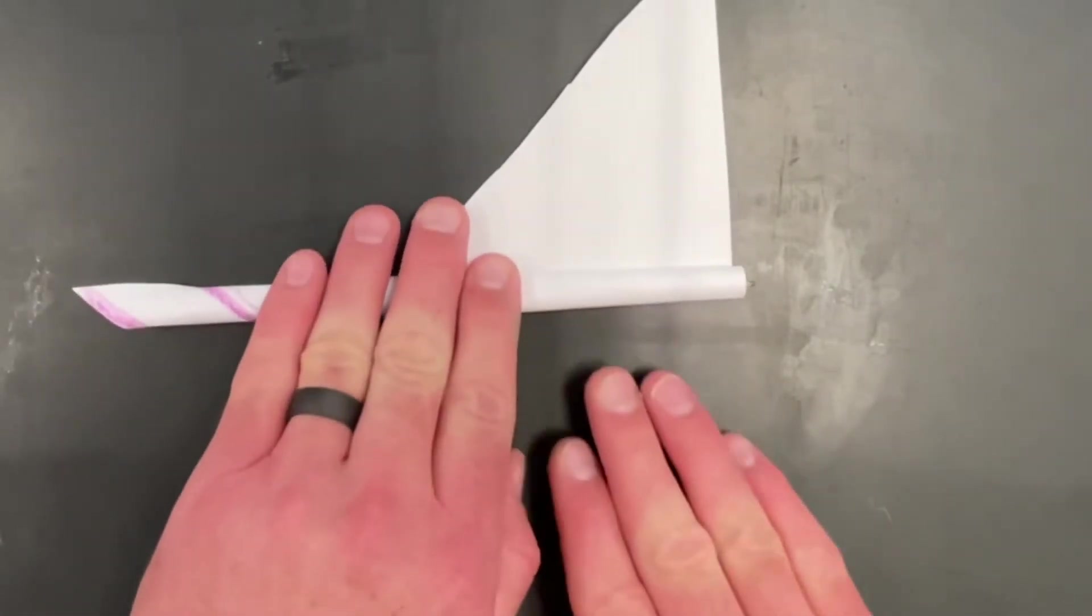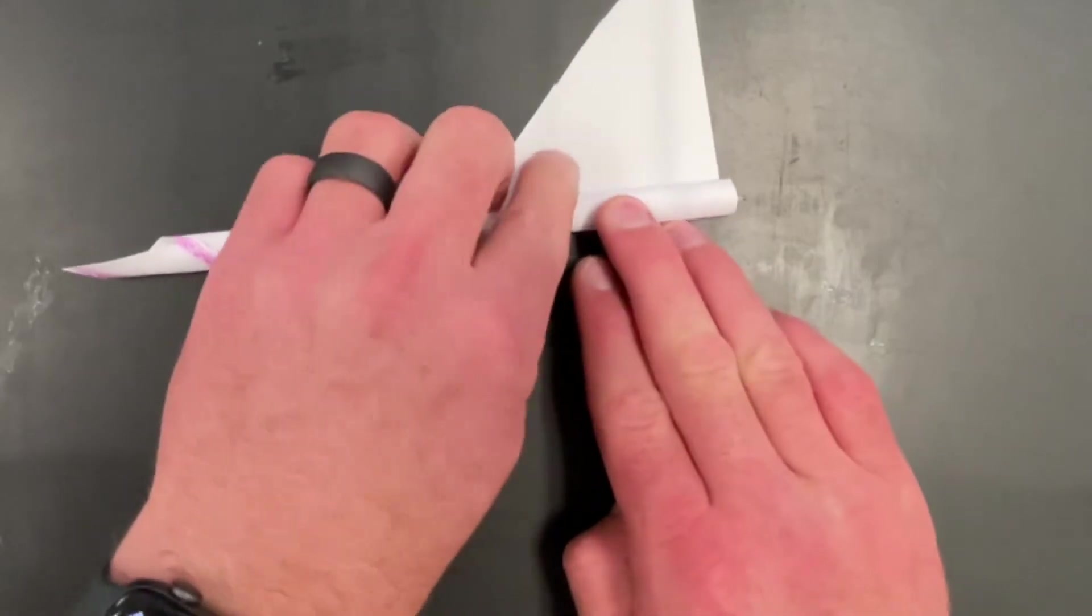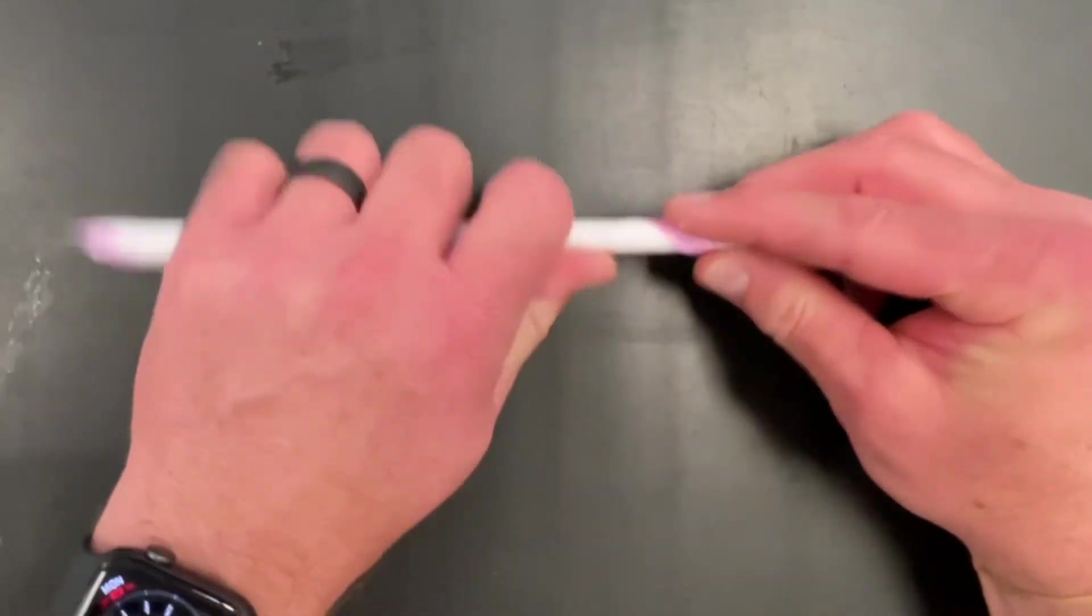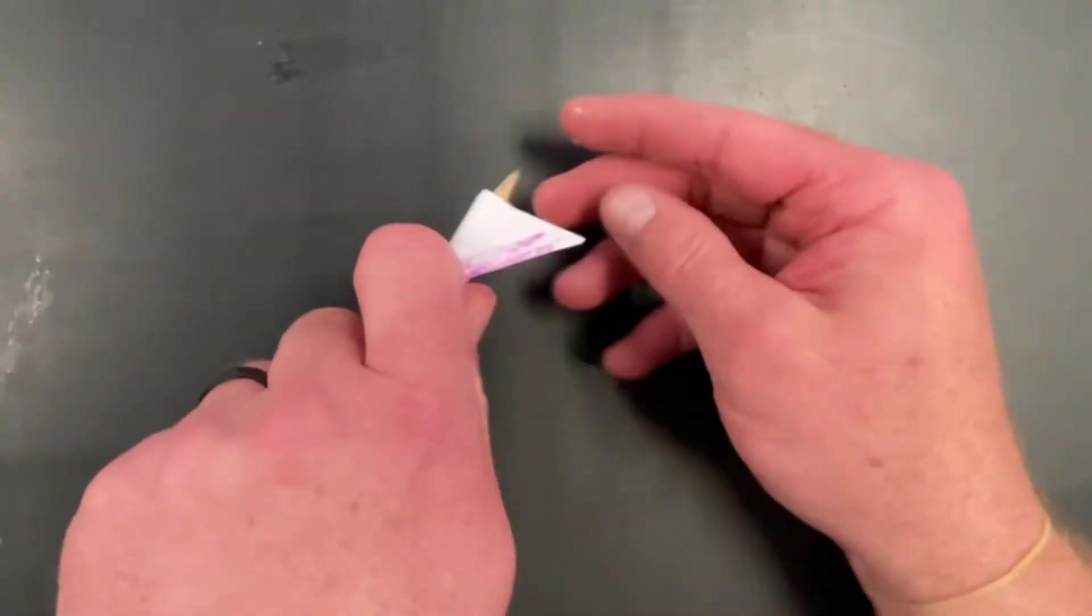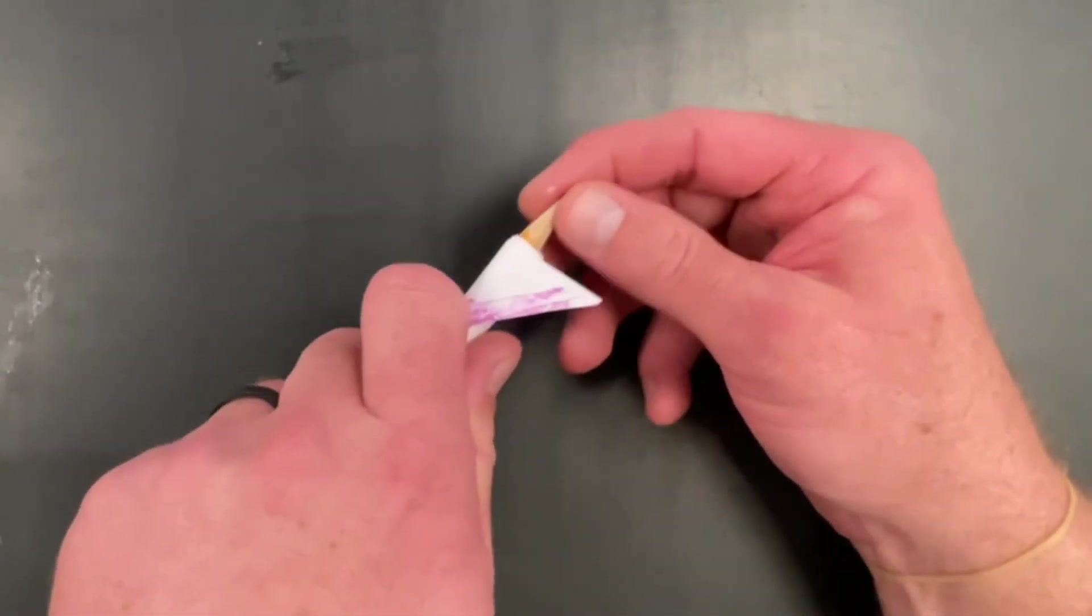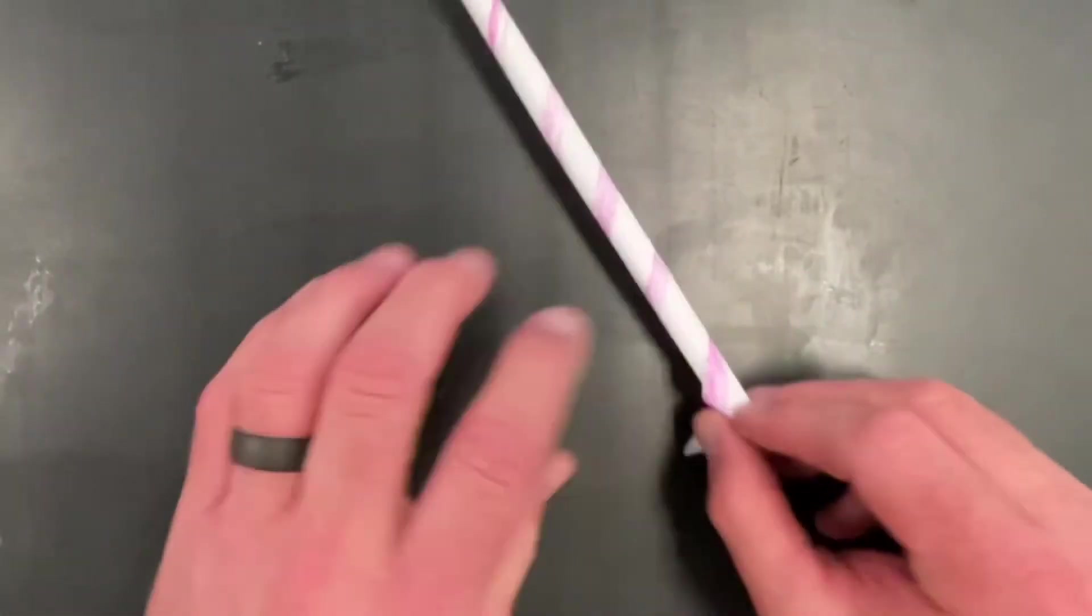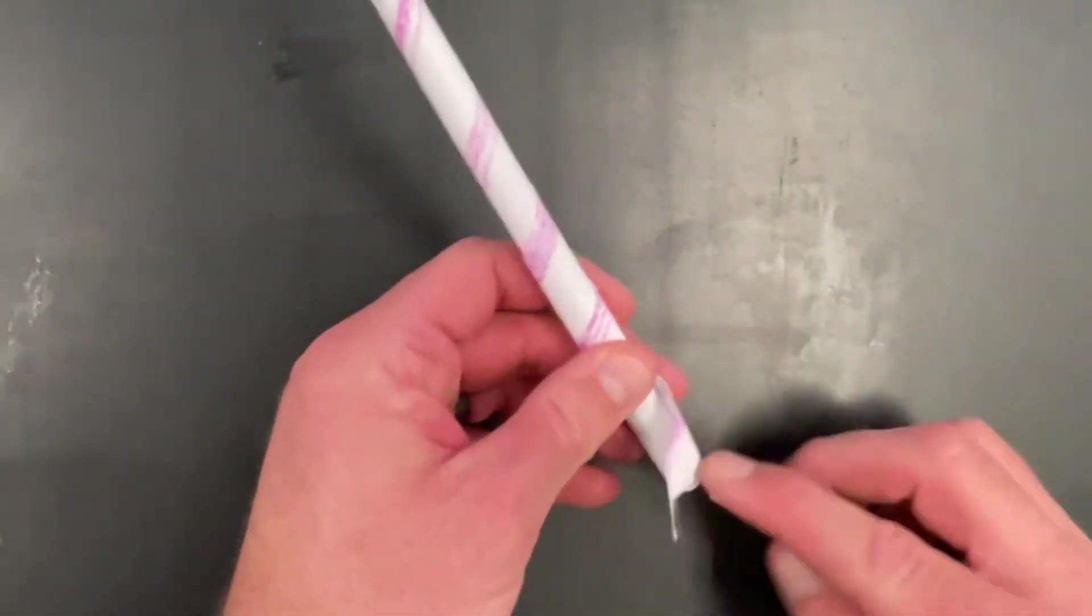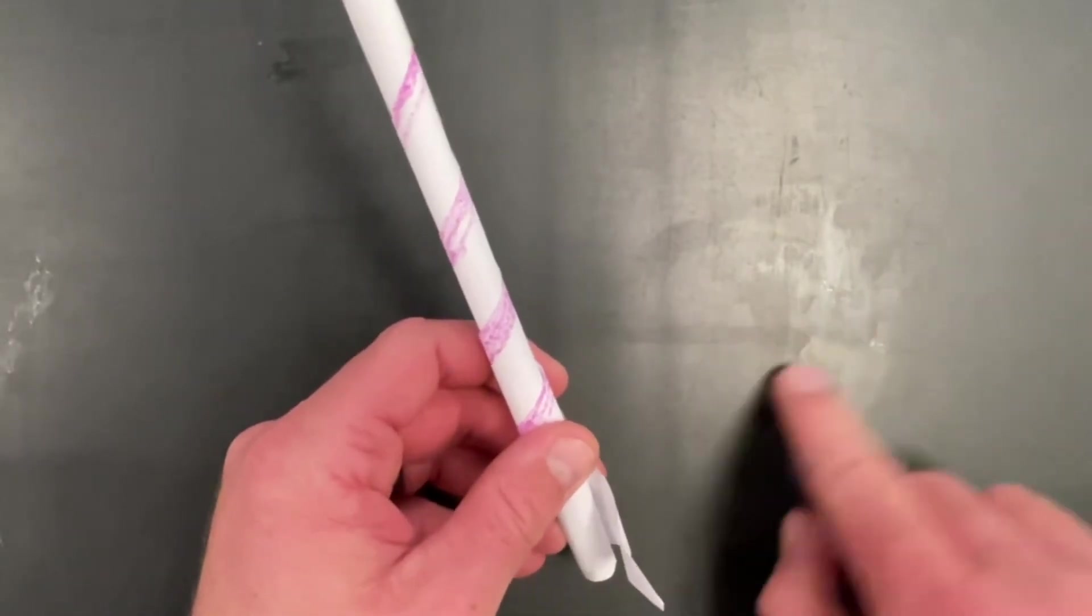You really want this to follow the line all the way up. See how it's staying with the line? You can adjust it as you need to. Let the pencil slide out. If it's too tight you can let it loosen in your hand a little bit. The pencil comes out and there you go.